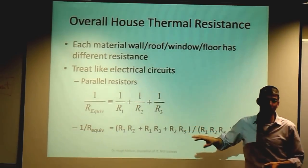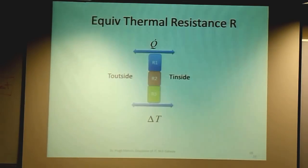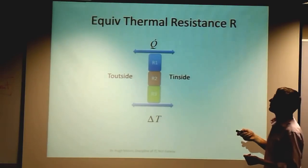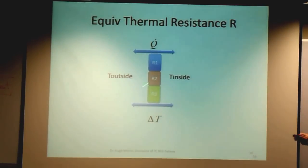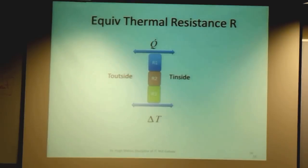Going back to our analogy, it's identical. You have different materials that have different thermal resistances. In the same way as you would have a circuit with R1, R2, and R3 with parallel resistors, what you have here is a house with the same potential applied across it but with different thermal resistances. You use the exact same formula to combine and get the overall resistance for a house.